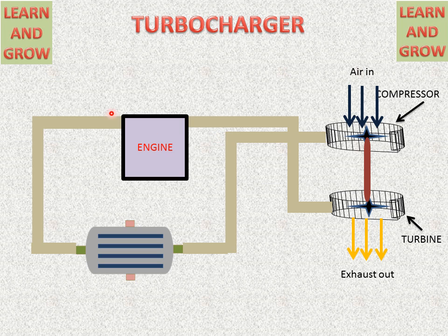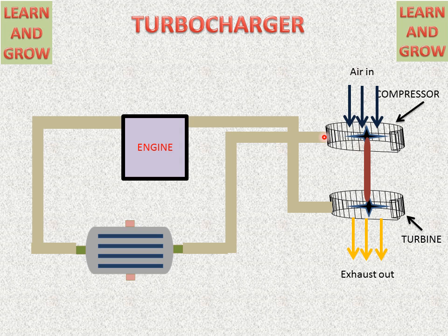This side is the intake of the engine, from which air will enter the engine so that combustion will take place in an efficient manner. These exhaust gases will be used in the turbine section for rotating purposes. Because these are connected with a common shaft, if the turbine rotates, then the compressor will also rotate. The compressor will then compress the air from the atmosphere and send it to the engine intake through the intercooler.